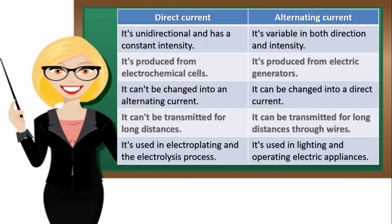Sources: direct electric current comes from electrochemical cells as simple cells and dry cells. Alternating electric current comes from electric generators, dynamos.